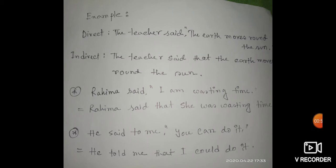The first example: 'The teacher said the earth moves around the sun.' This is an example of a universal truth — the earth moves around the sun. So in indirect speech it will be unchanged: 'The teacher said that the earth moves around the sun,' because universal truths remain unchanged.